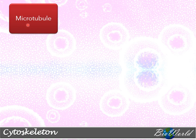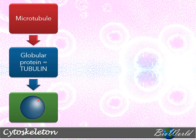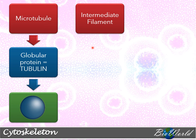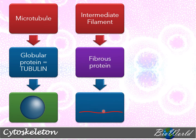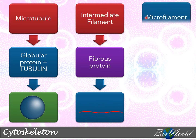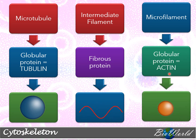Each of the cytoskeleton structures is made up of a different protein. The microtubule is made up of a globular protein called tubulin. The intermediate filament is made up of a fibrous protein that has a string-like appearance. Finally, microfilaments are made up of globular proteins called actins, which are smaller in size compared to tubulins.